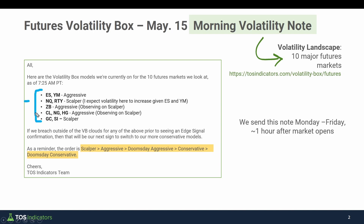The note contains the volatility landscape for 10 major futures markets. We have the index markets, the 30-year bond, crude, natural gas, and copper, and then finally gold and silver. You'll notice verbiage next to each one of these markets, and that contains the volatility model that that particular market is on.